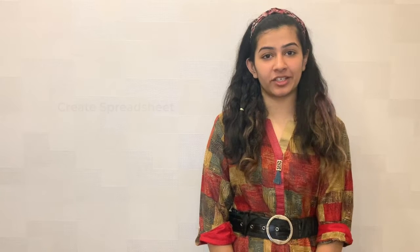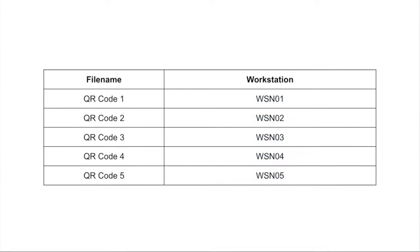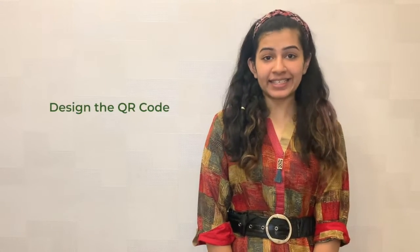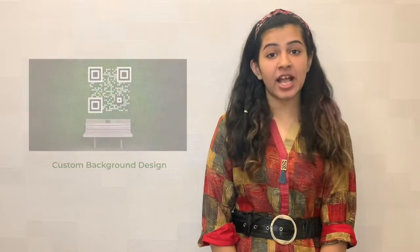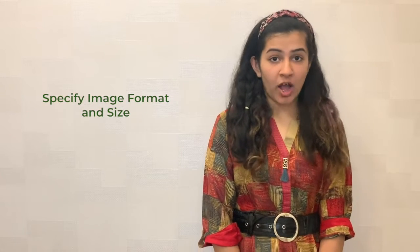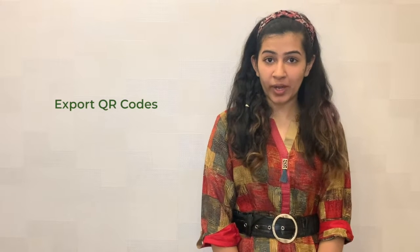The first step is to create a spreadsheet — add the data which you want to encode in the QR code. Then upload the spreadsheet. The third step is to add a design to the QR code; you can customize it by adding a logo or changing the background image. Then you can specify the image format and size of the QR code.